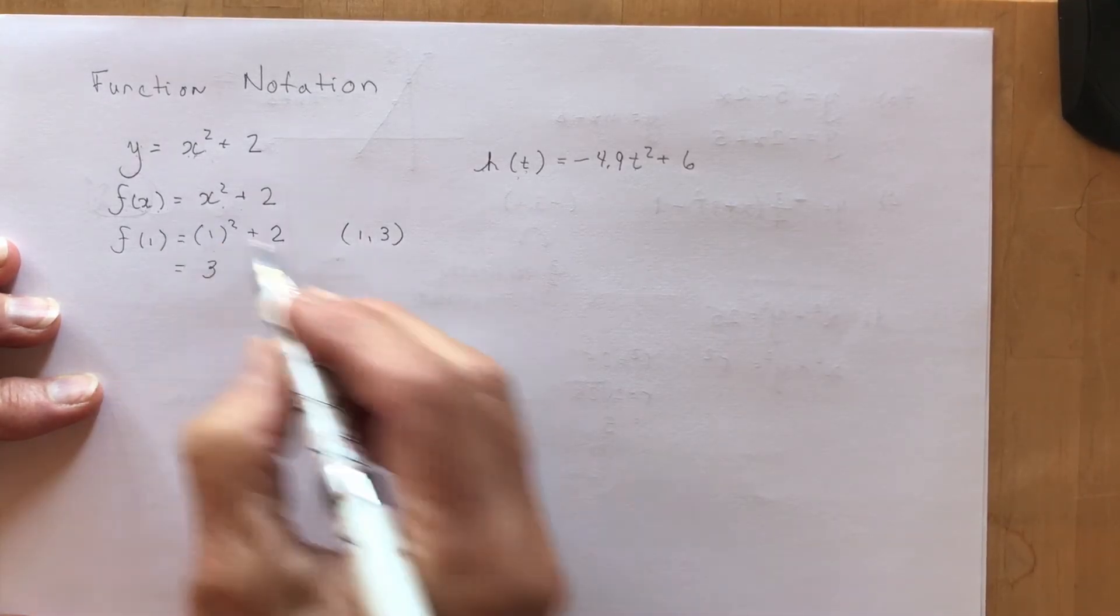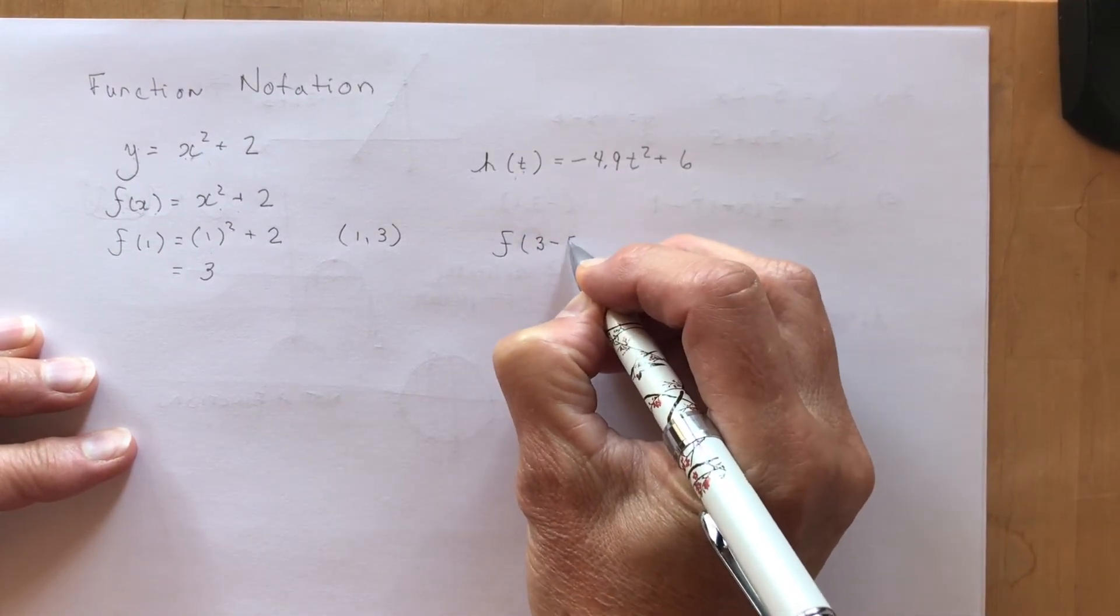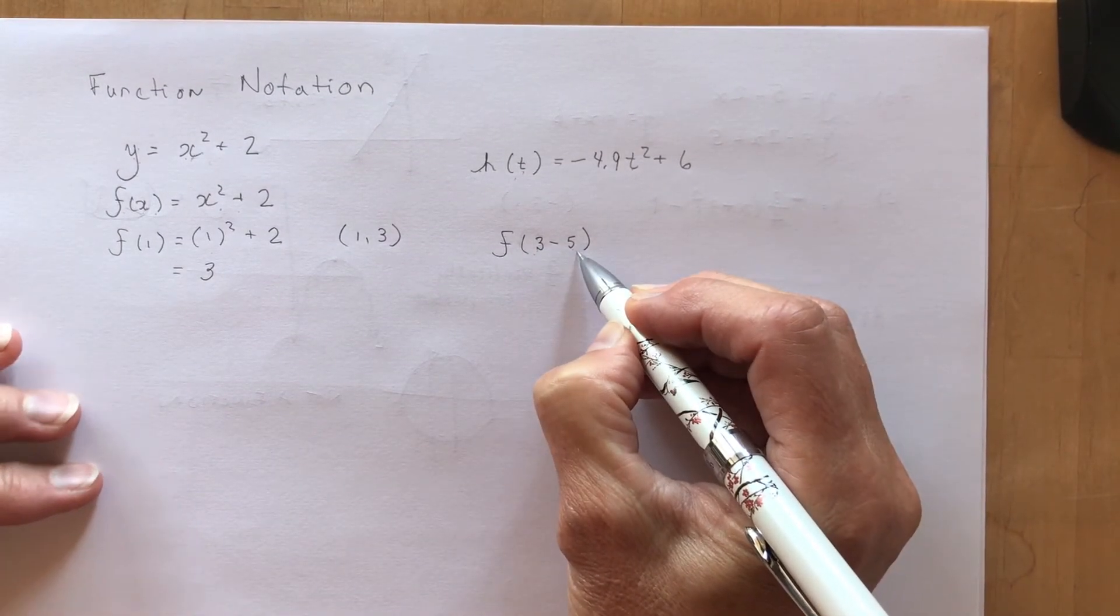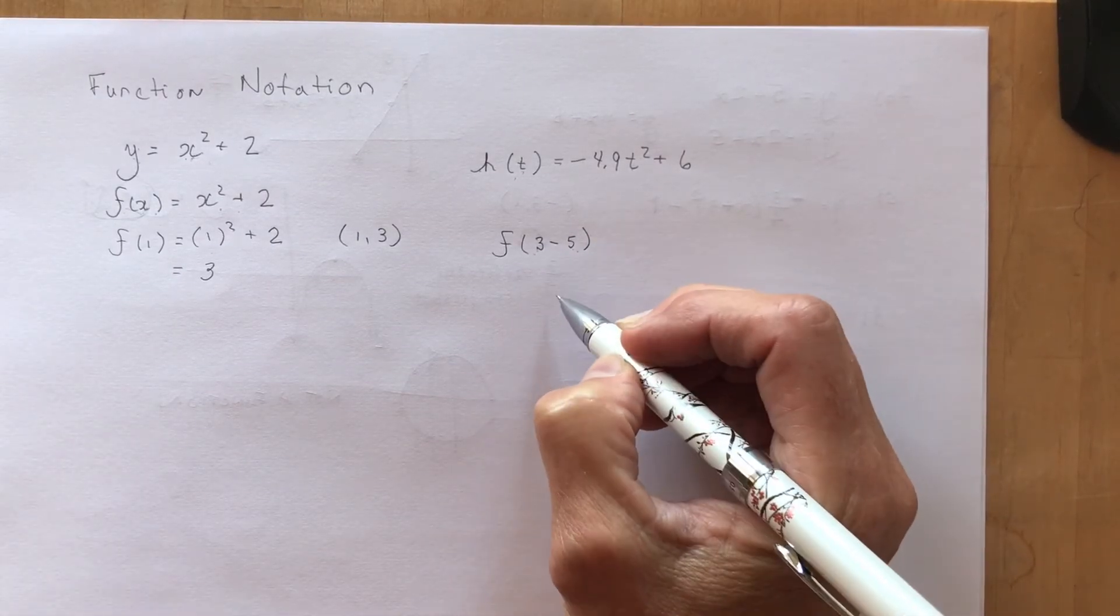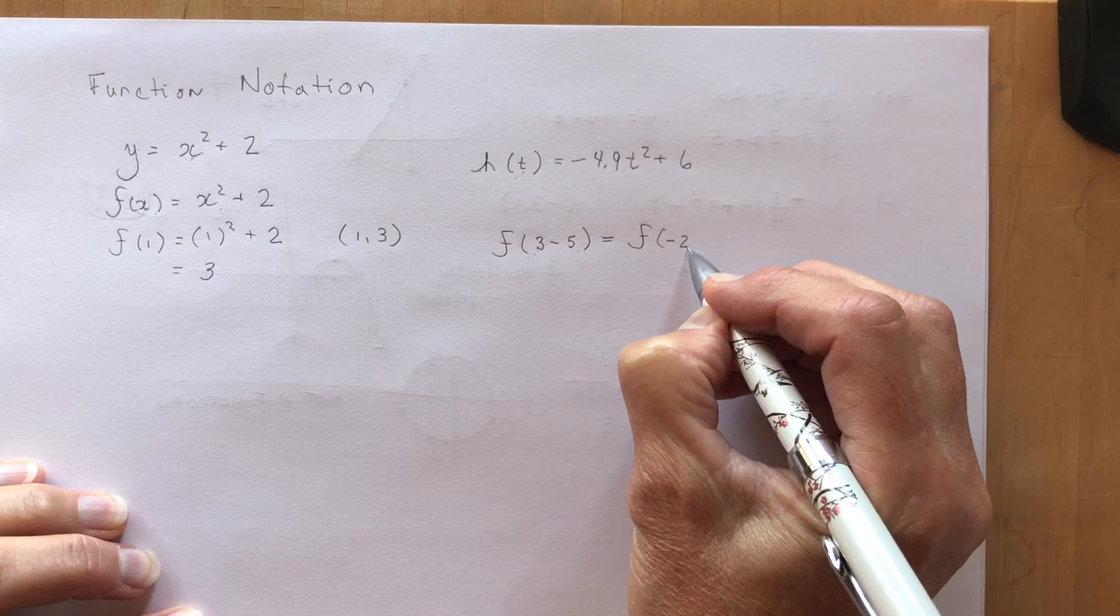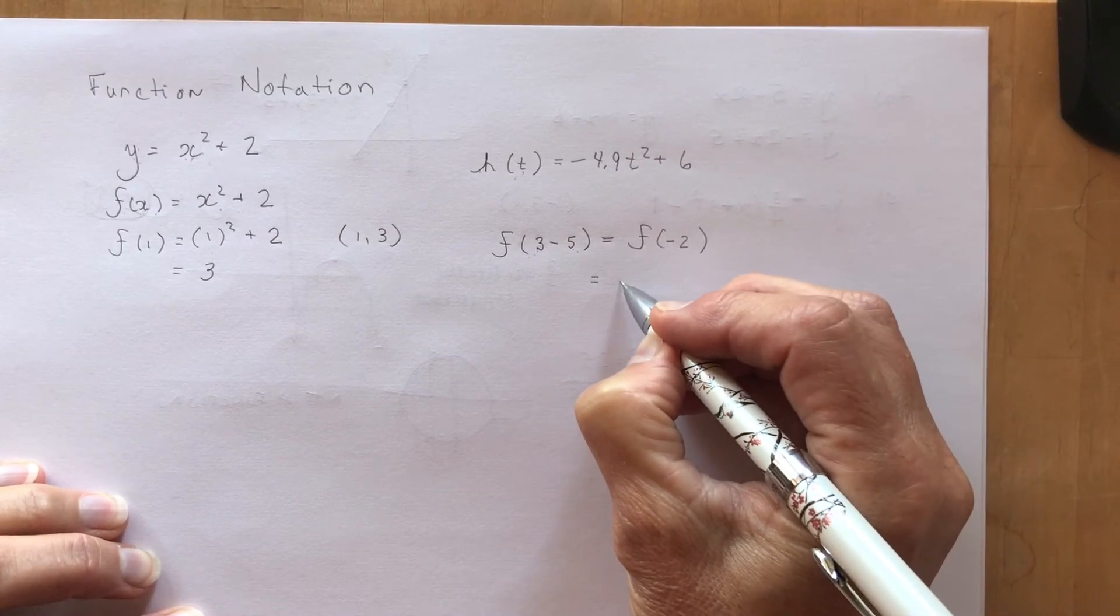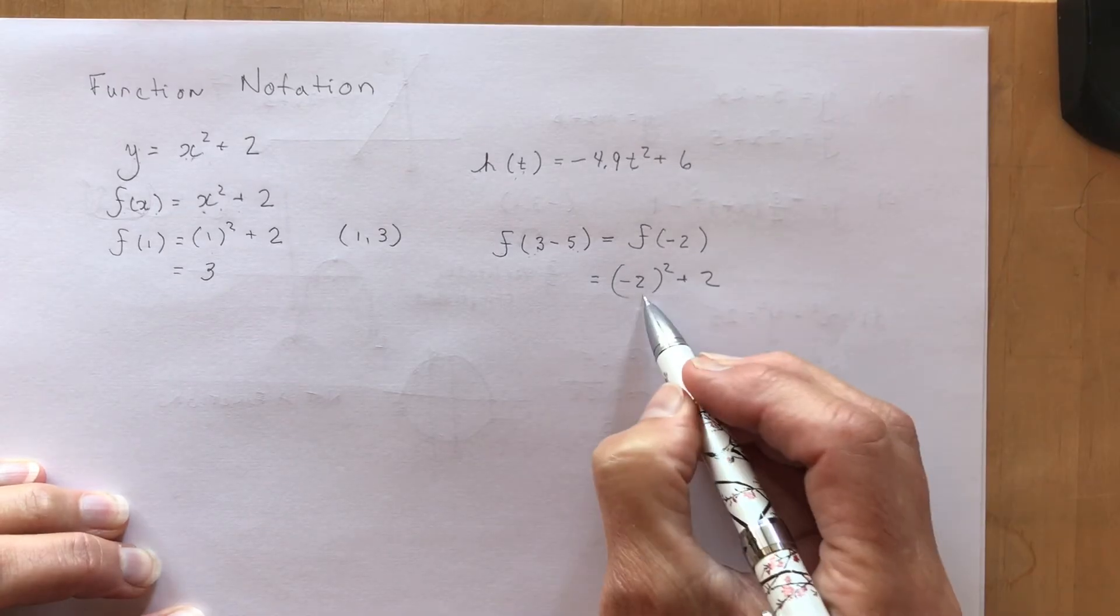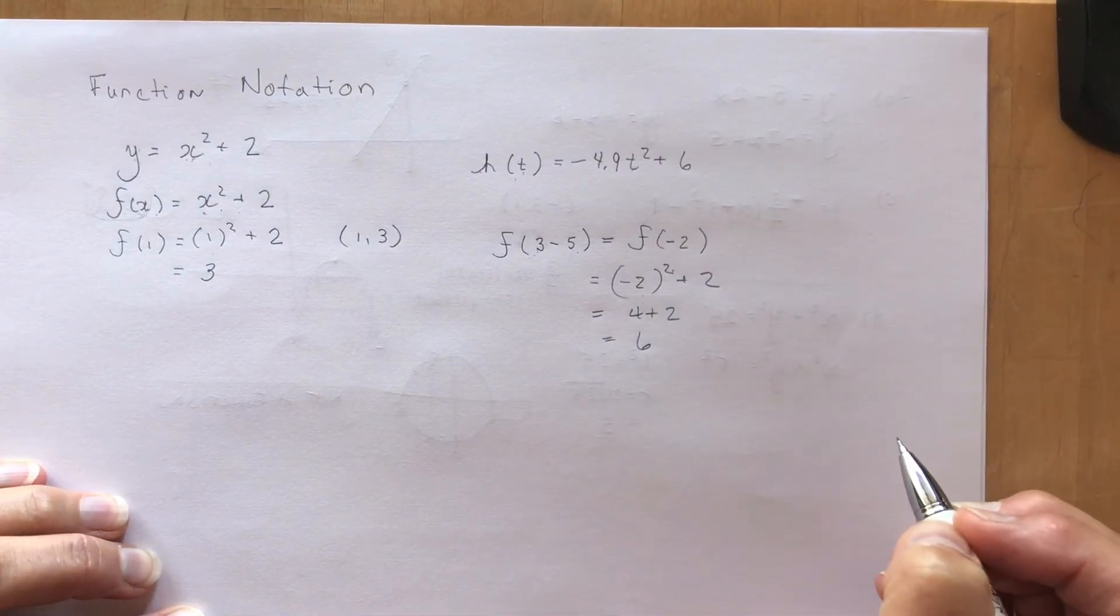In your homework questions they ask you a couple of other little things. They'll say what is f at 3 minus 5? When it's inside the brackets, using your BEDMAS rules you always had to work with the brackets first. So f at 3 minus 5 is simply f at minus 2. So f at minus 2 would be minus 2 squared plus 2, which gives me 6.